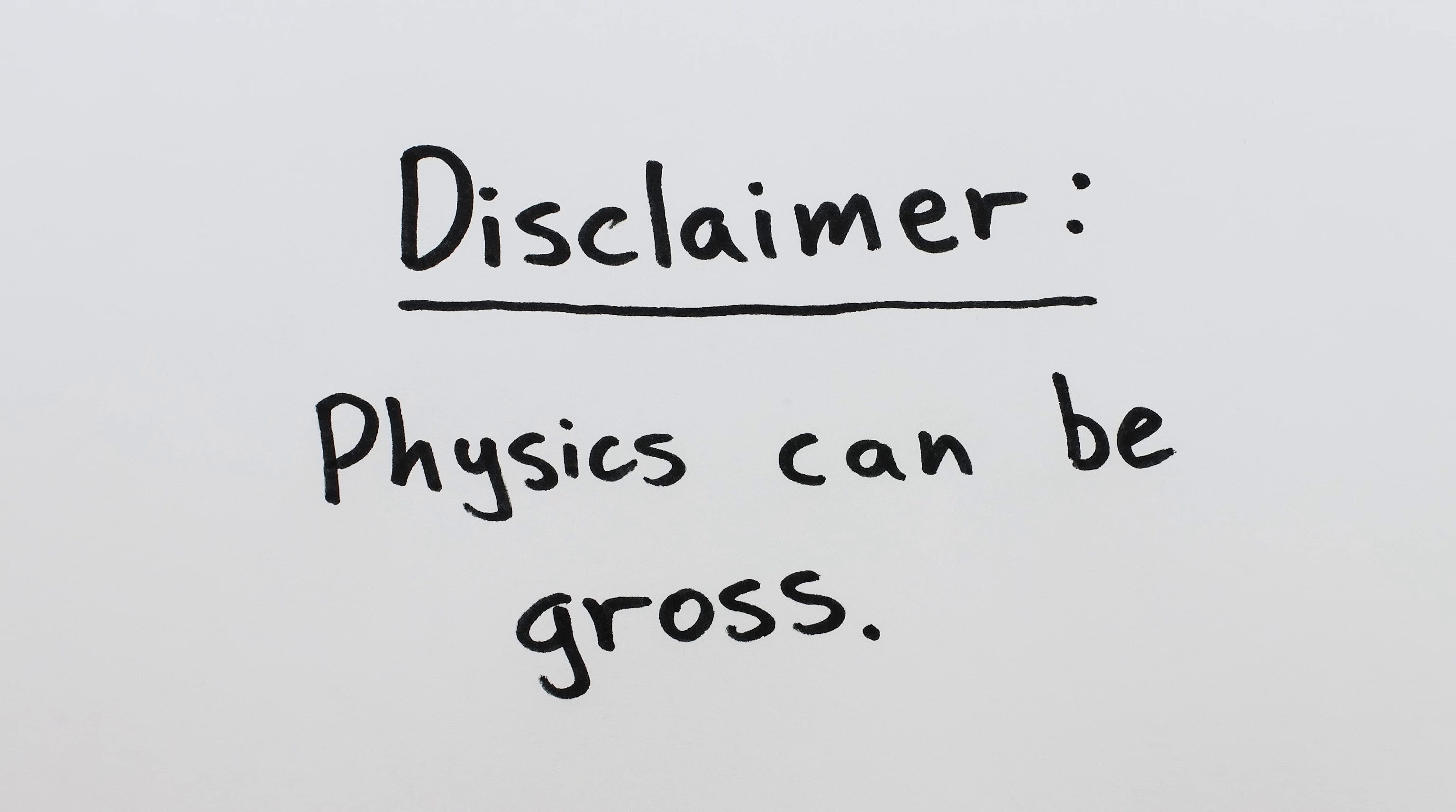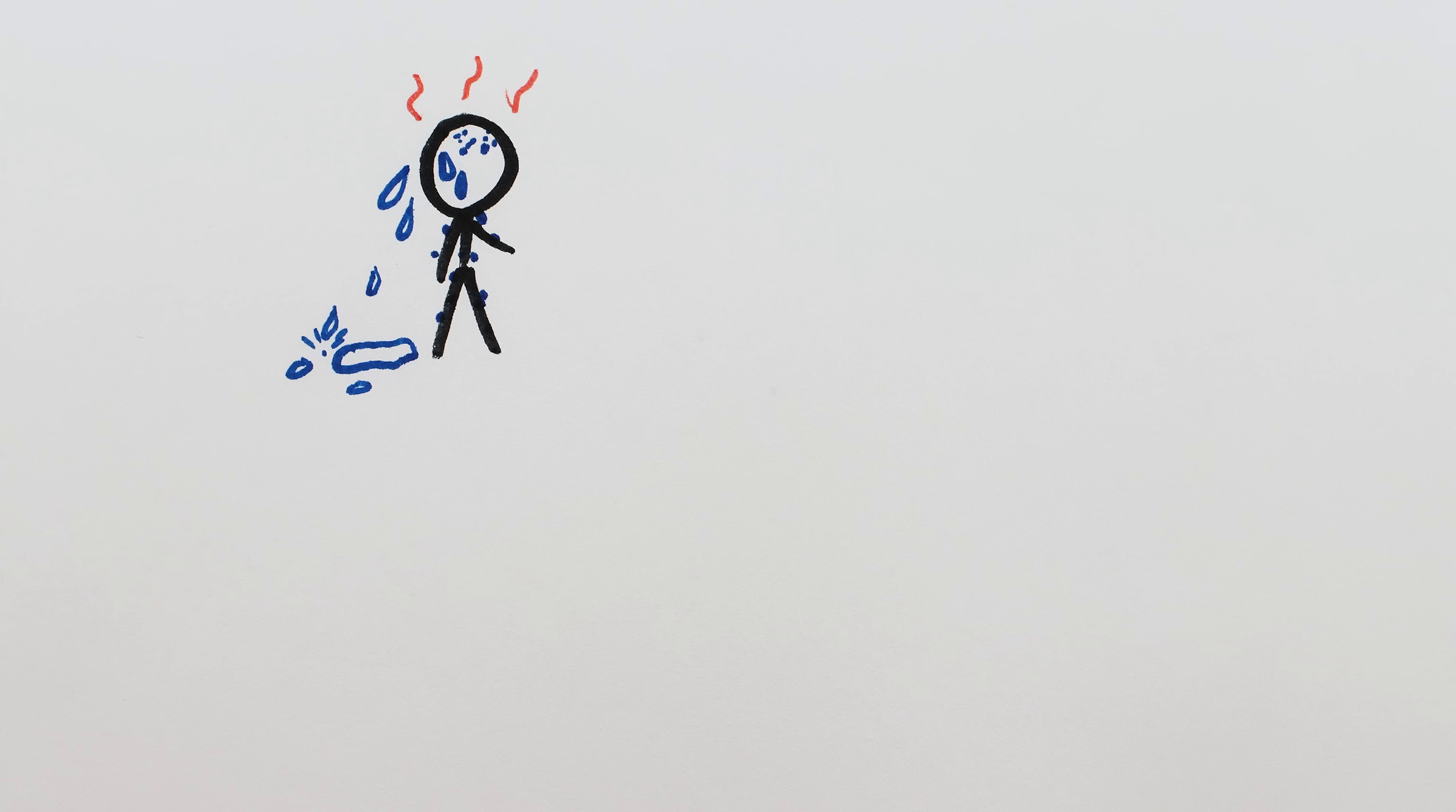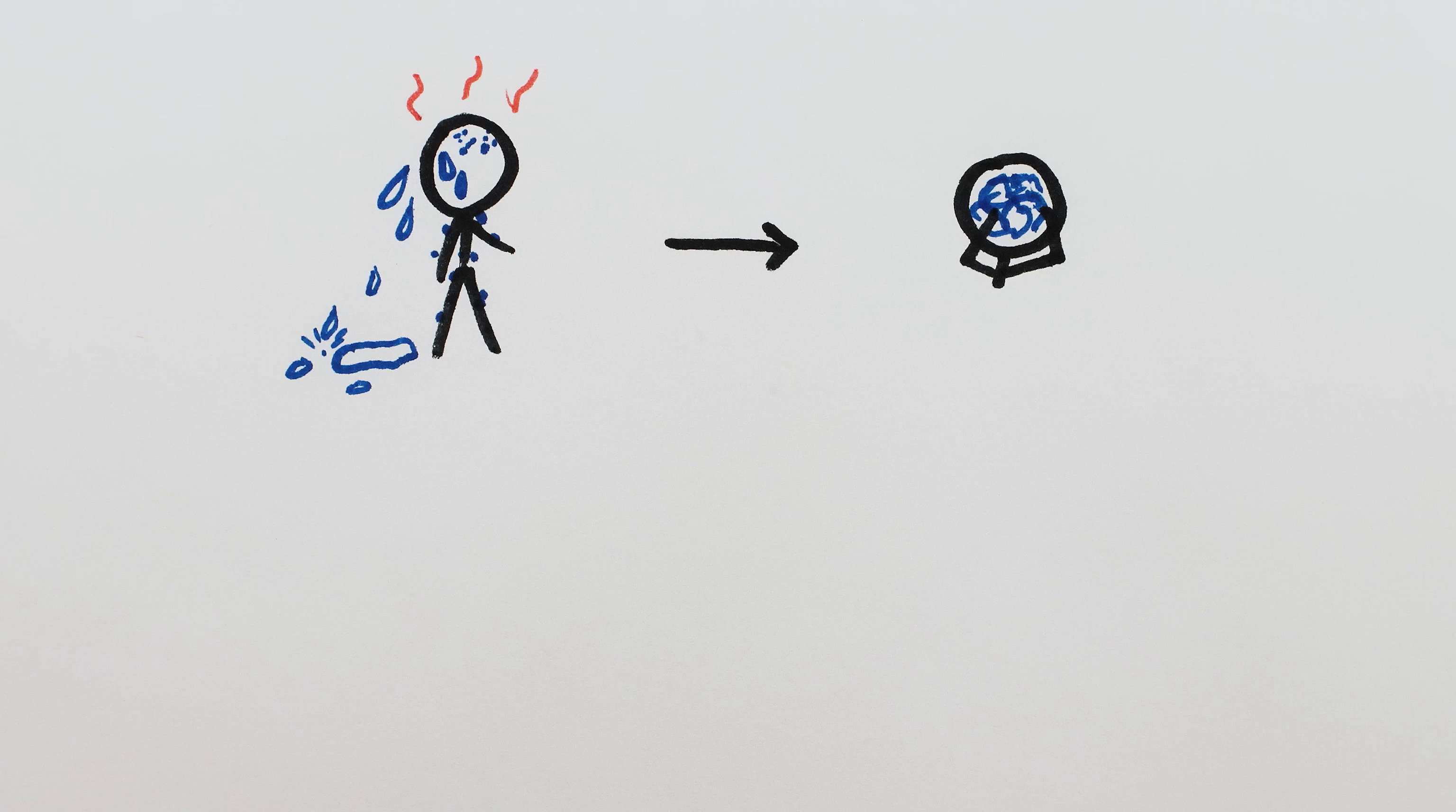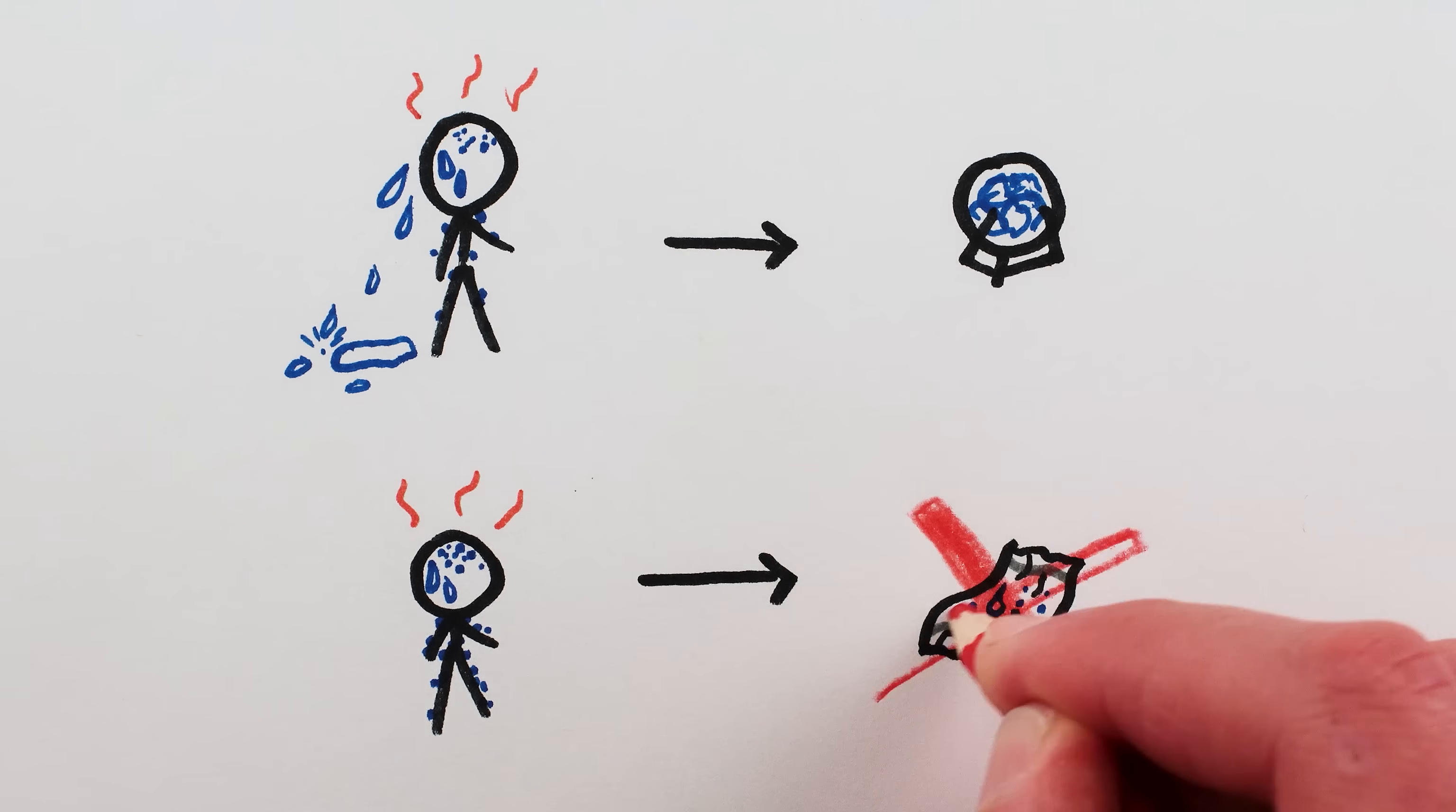As a reminder, nothing in this video constitutes medical or hygiene advice. But if your sweat is dripping, it's much better, for the purposes of evaporative cooling, to smear it around rather than wipe it off entirely. And if you're hot and sweaty, but it's not dripping, physics says leave it on.